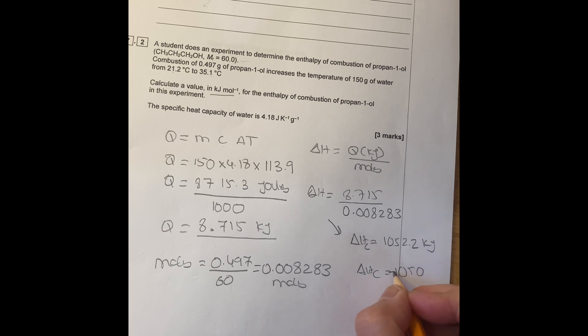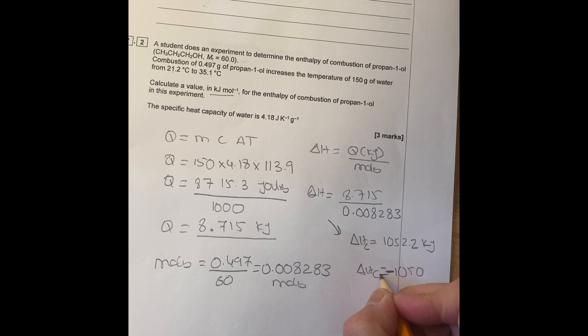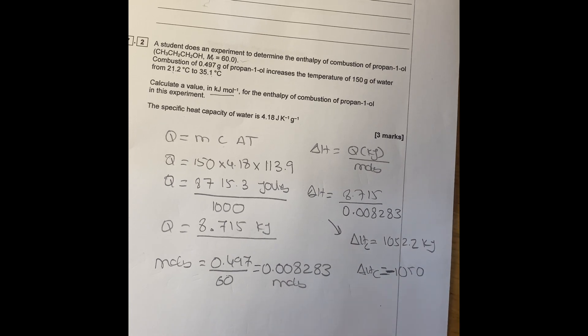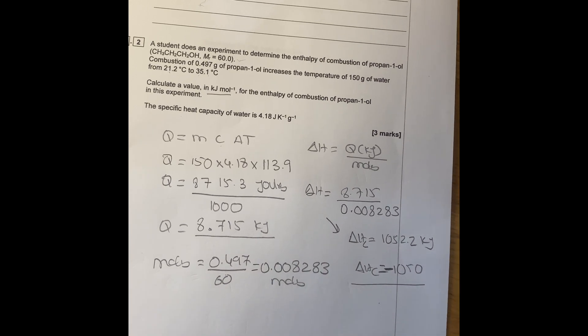But you need to put a negative value here. It's negative because of an exothermic reaction. You will get an extra mark for the negative value. Don't forget the negative value for this answer. So the answer is minus 1050 kilojoules per mole.